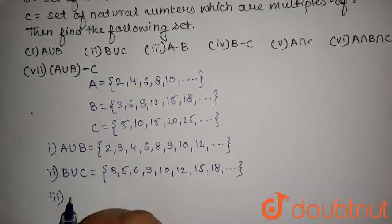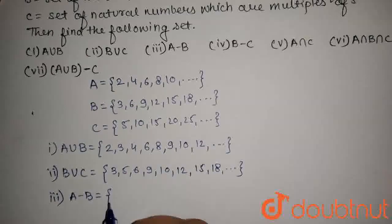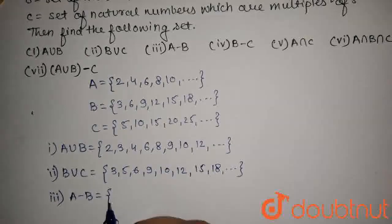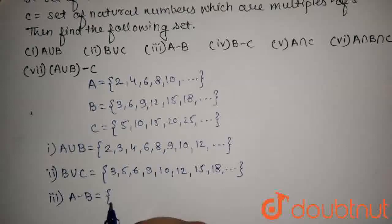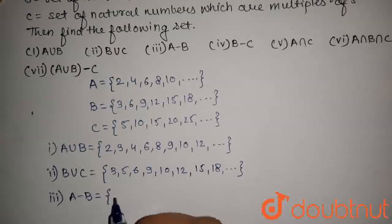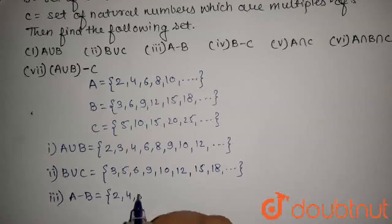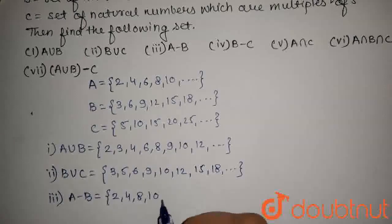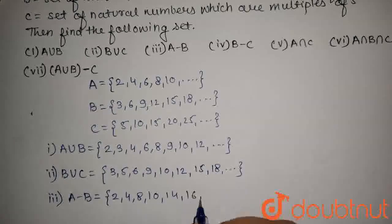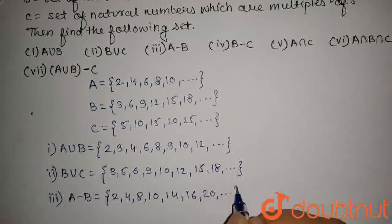The third part is to find A minus B. A minus B will contain natural numbers which are multiples of 2 but not multiples of 3. So this set will contain elements 2, 4, 8, 10, 14, 16, 20, and so on.